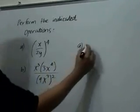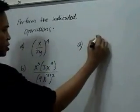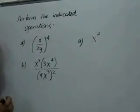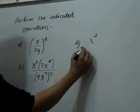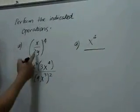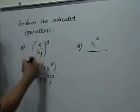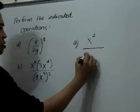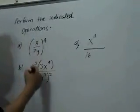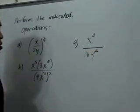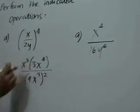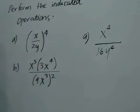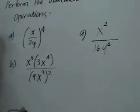So x to the 4th is simply x raised to the 4th, and for 2y raised to the 4th, we have 2 to the 4th, or 2 multiplied by itself 4 times, that would be 16, and y to the 4th. This is the answer when you raise x over 2y to the 4th.